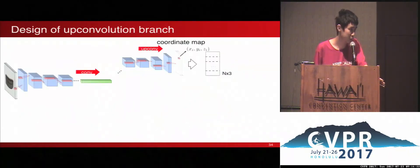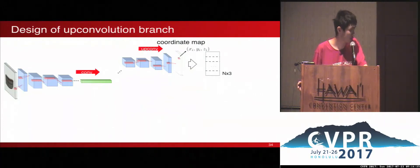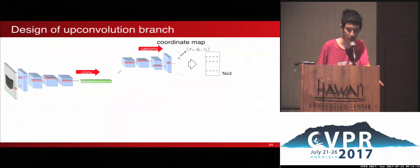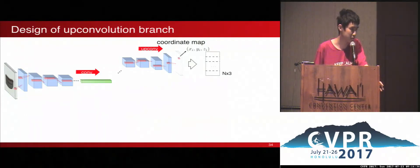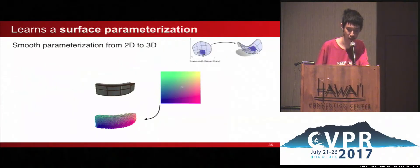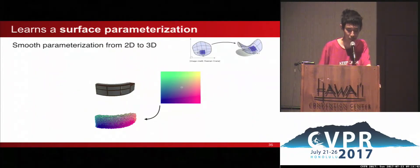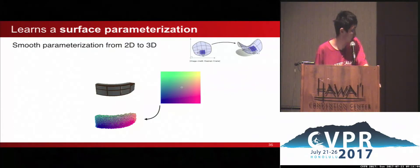Let's think about the role of deconvolution in the network. It is really a 2D parameterization of the object — the output of the deconvolutional layers is a 2D grid of 3D points, which is actually a way to wrap or unfold an object's surface into a plane.